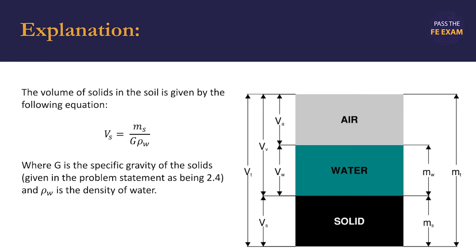The volume of the solids in the soil is given by the equation V sub S equals M sub S divided by the product of G, the specific gravity of the solids, and rho sub W, the density of water.